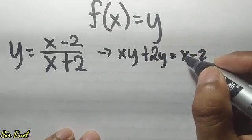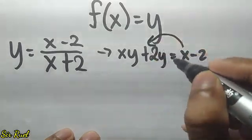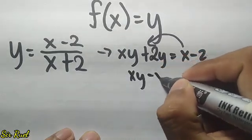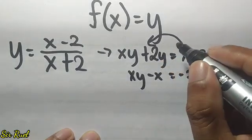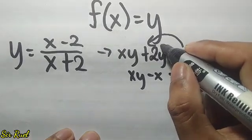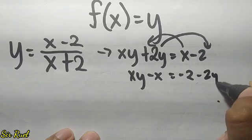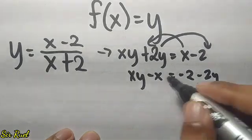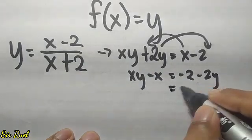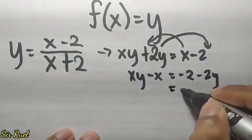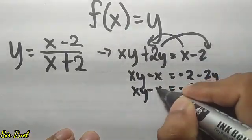We solve for x. Let's transpose: we have xy minus x on the left side. The 2y gets transposed, so it becomes negative 2y on the right side, giving us negative 2y minus 2.